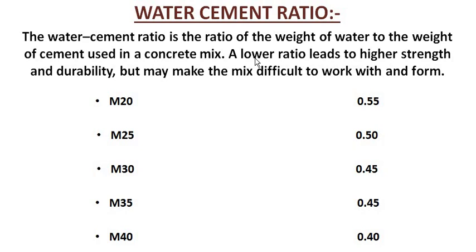Today I will tell you the water-cement ratios for different concrete grades. M20 has a ratio of 0.55, M25 is 0.50, M30 is 0.45, M35 is 0.45, and M40 is 0.40.